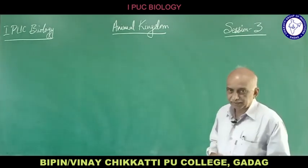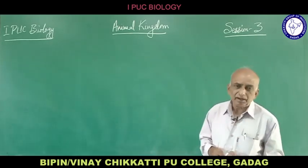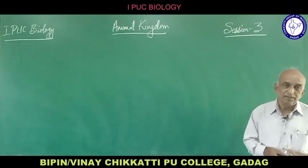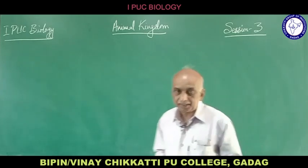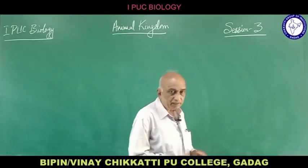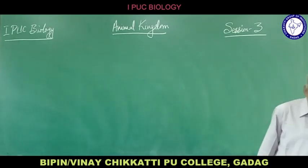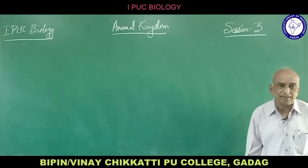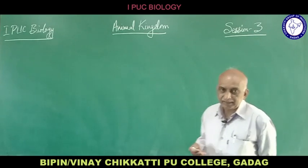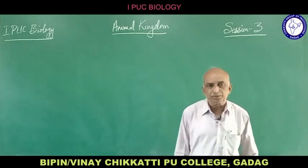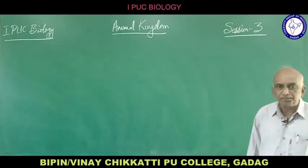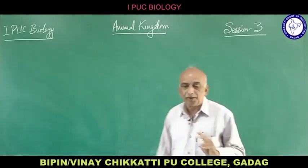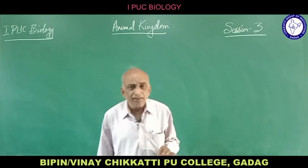The tail fin or caudal fin in Chondrichthyes is heterocercal — unequal in size. In class Osteichthyes, bony fishes, they are found in both marine and freshwater. The body skeleton is made up of bones.